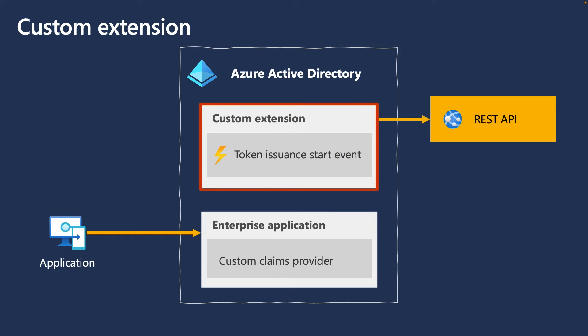Let's start with Custom Extensions. Custom Extensions in Azure Active Directory allow you to interact with external systems during a user authentication. The custom extension contains information about your REST API endpoint, the credentials to call the REST API, the attributes that it returns, and when the REST API should be called.